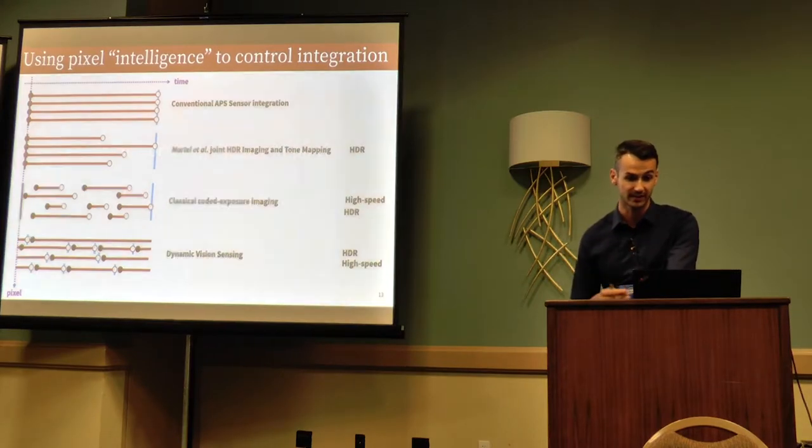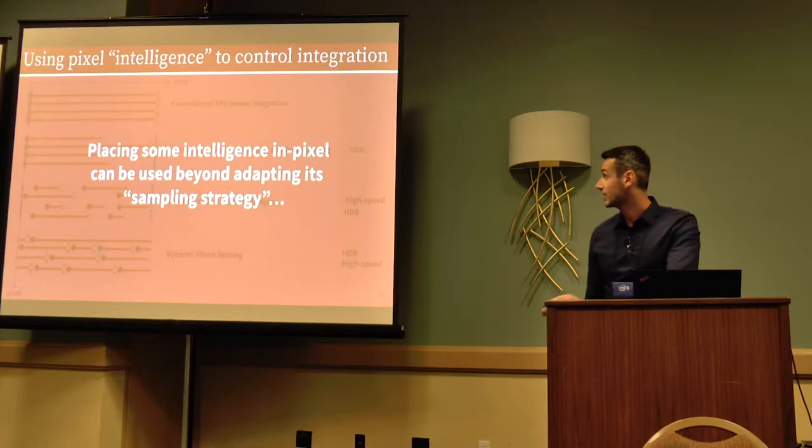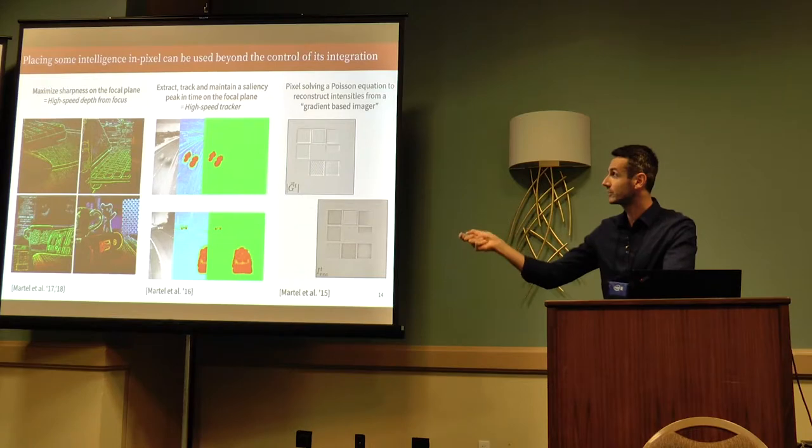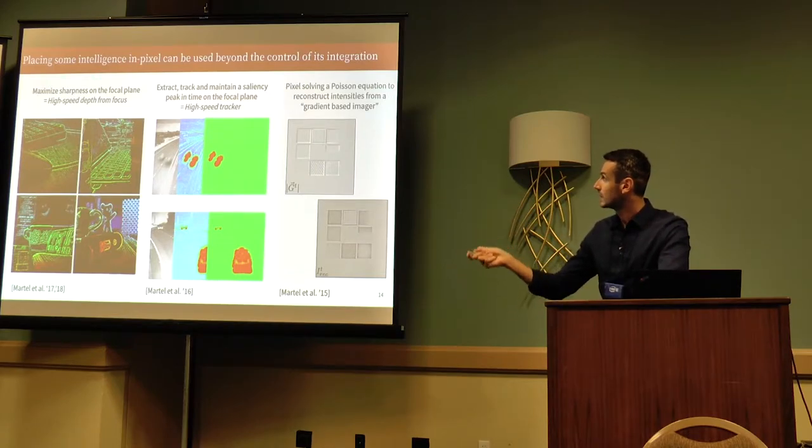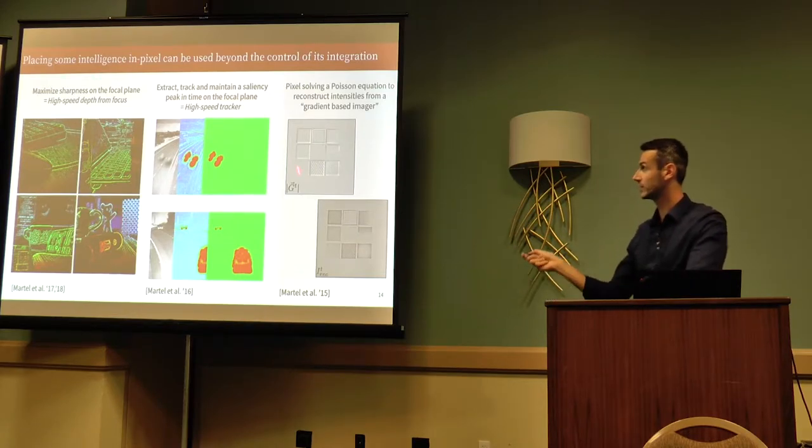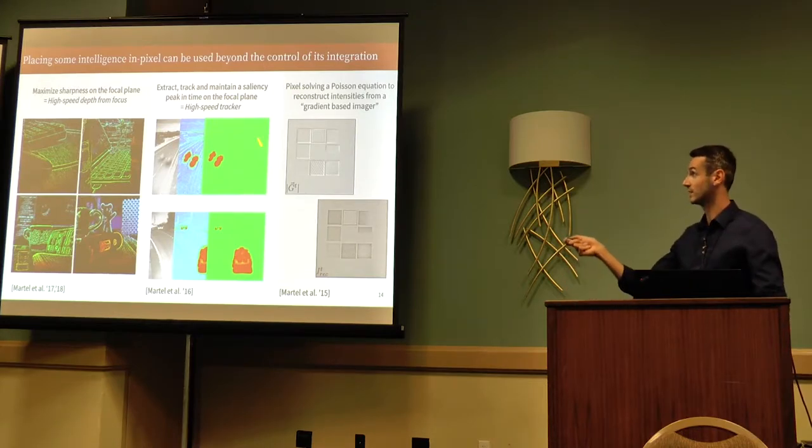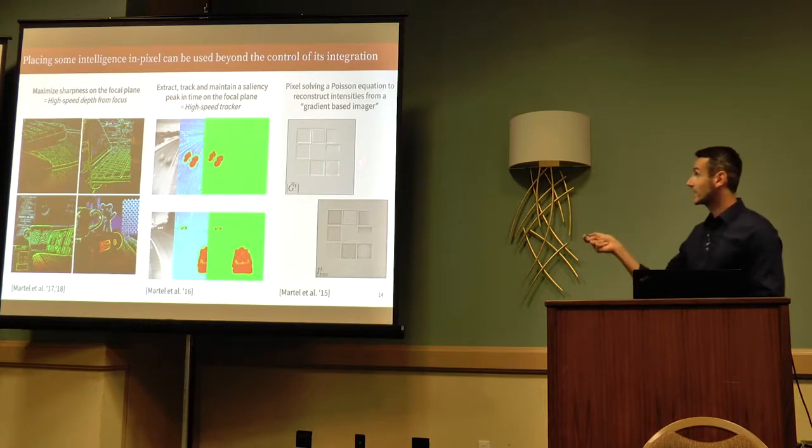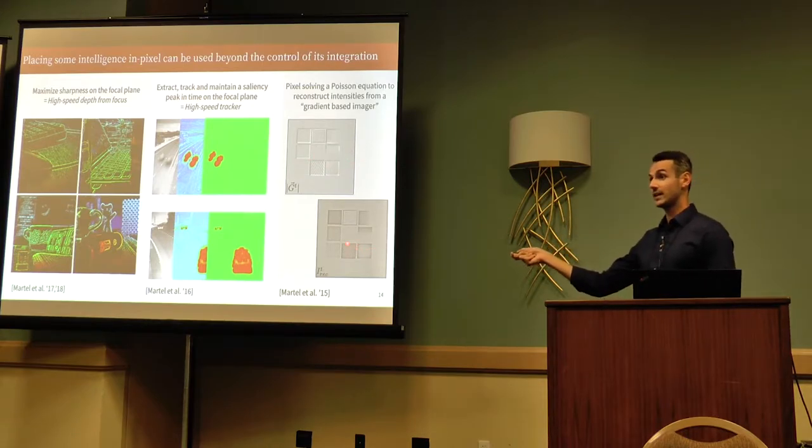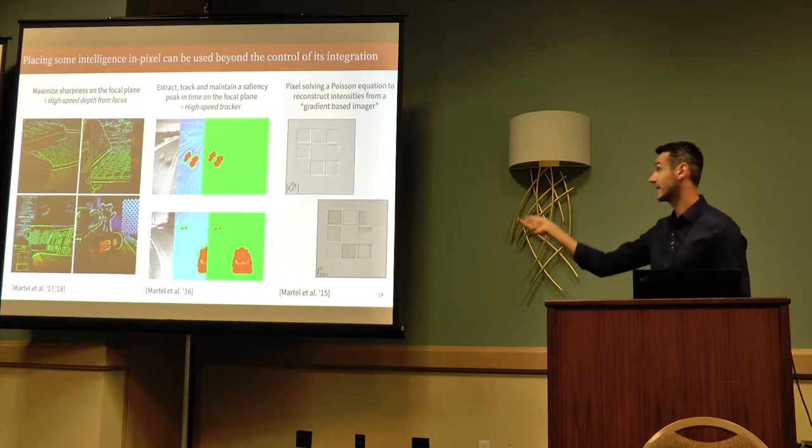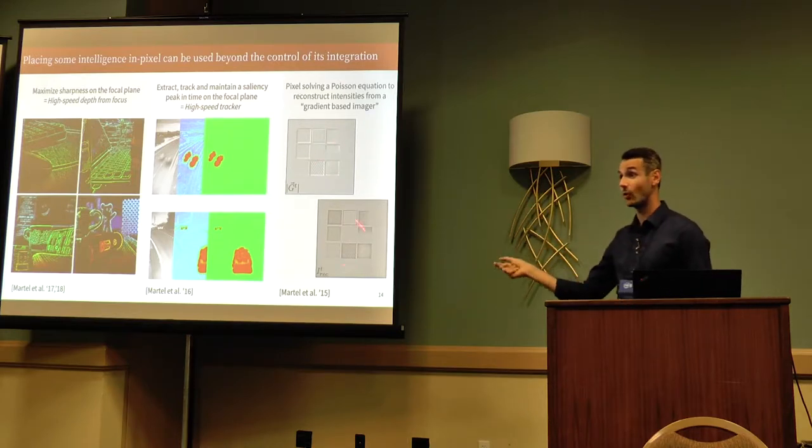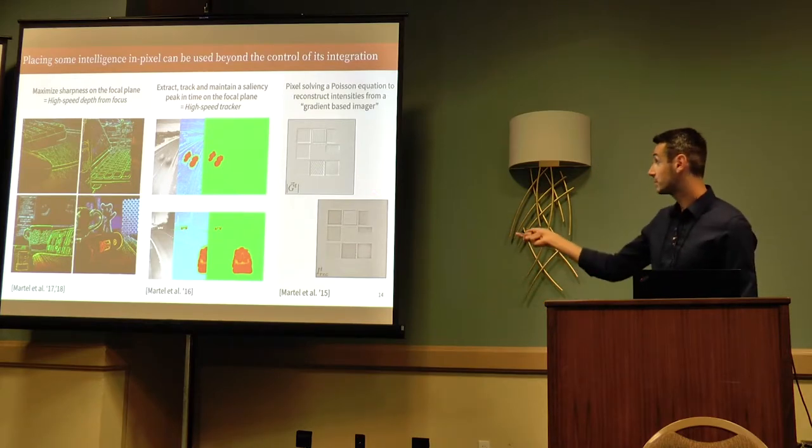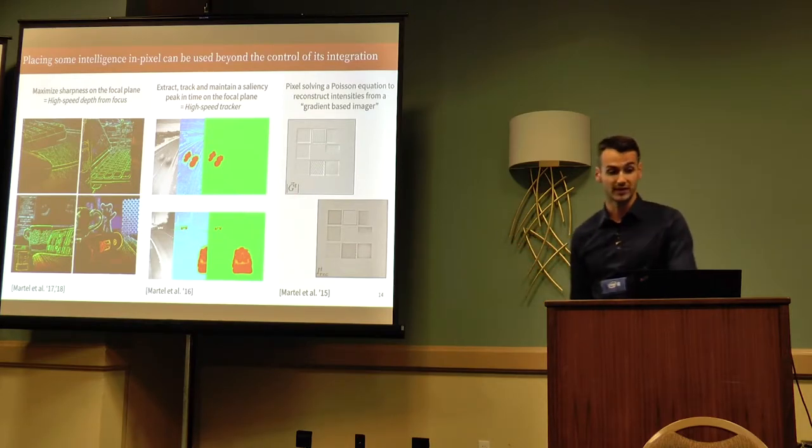Is that the only thing we can do by placing some intelligence in pixel? Well, actually, we demonstrated we can do a bunch of different things. Here I'm just showing a bunch of our work we did. We used that for depth from focus. We used that for tracking using similar equations that Eula presented in the previous talks. And to answer Robert, we actually also used it to solve Poisson equation directly on the focal plane and we can get a gradient imager that also solves its own little image reconstruction. So it's indeed possible to do this with this kind of local processing.